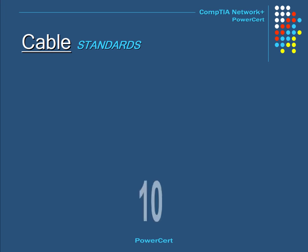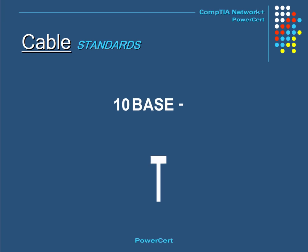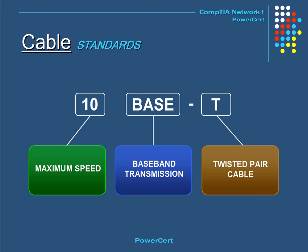Today there are many different cable standards used on networks. These cables are categorized and named according to their speed, type, and media. For example, 10BASE-T: the 10 stands for the maximum speed of 10 megabits per second, BASE stands for baseband transmission, and T stands for twisted pair cable.